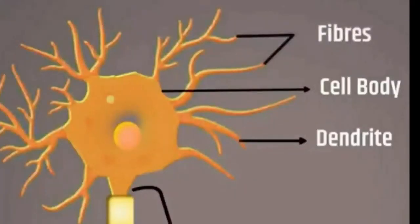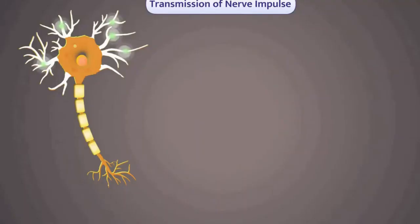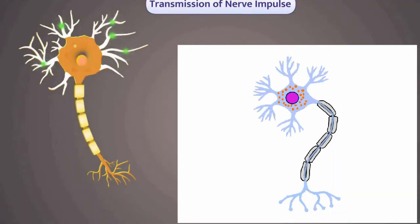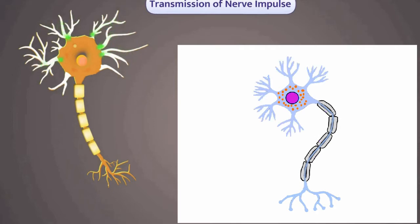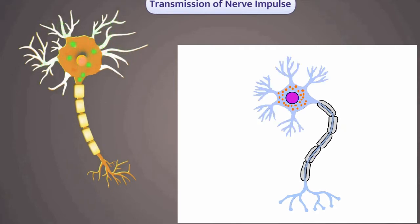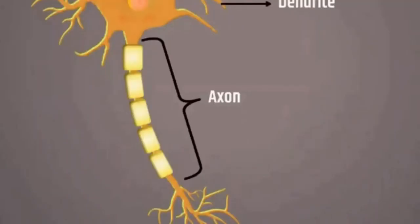Second one is dendrites. There are some projections arising from the cell body. These are called dendrites. They are short, branched, and more in number. The functions of dendrites are to receive information from other neurons and sense organs and to transfer the information to the soma of the neuron.